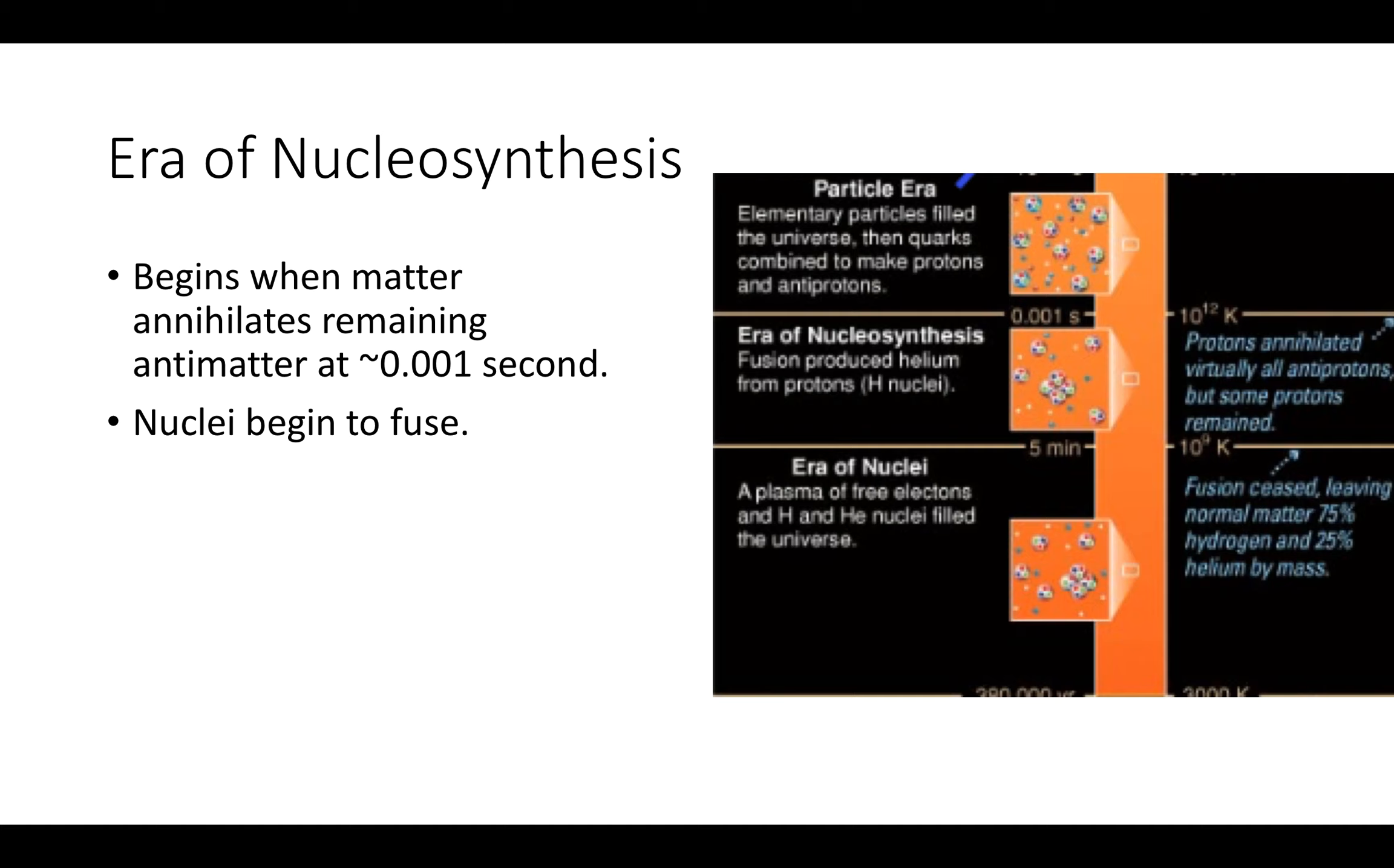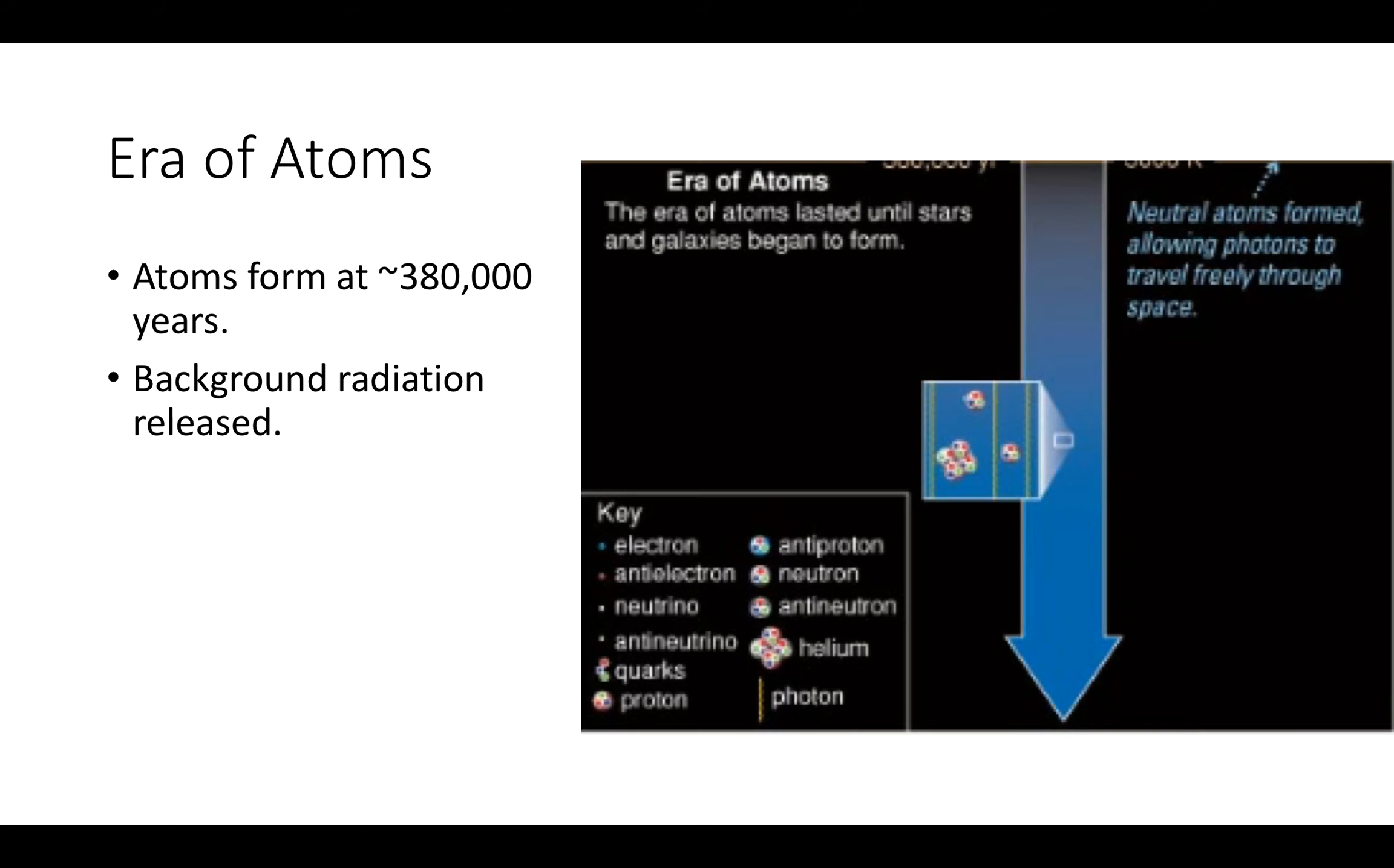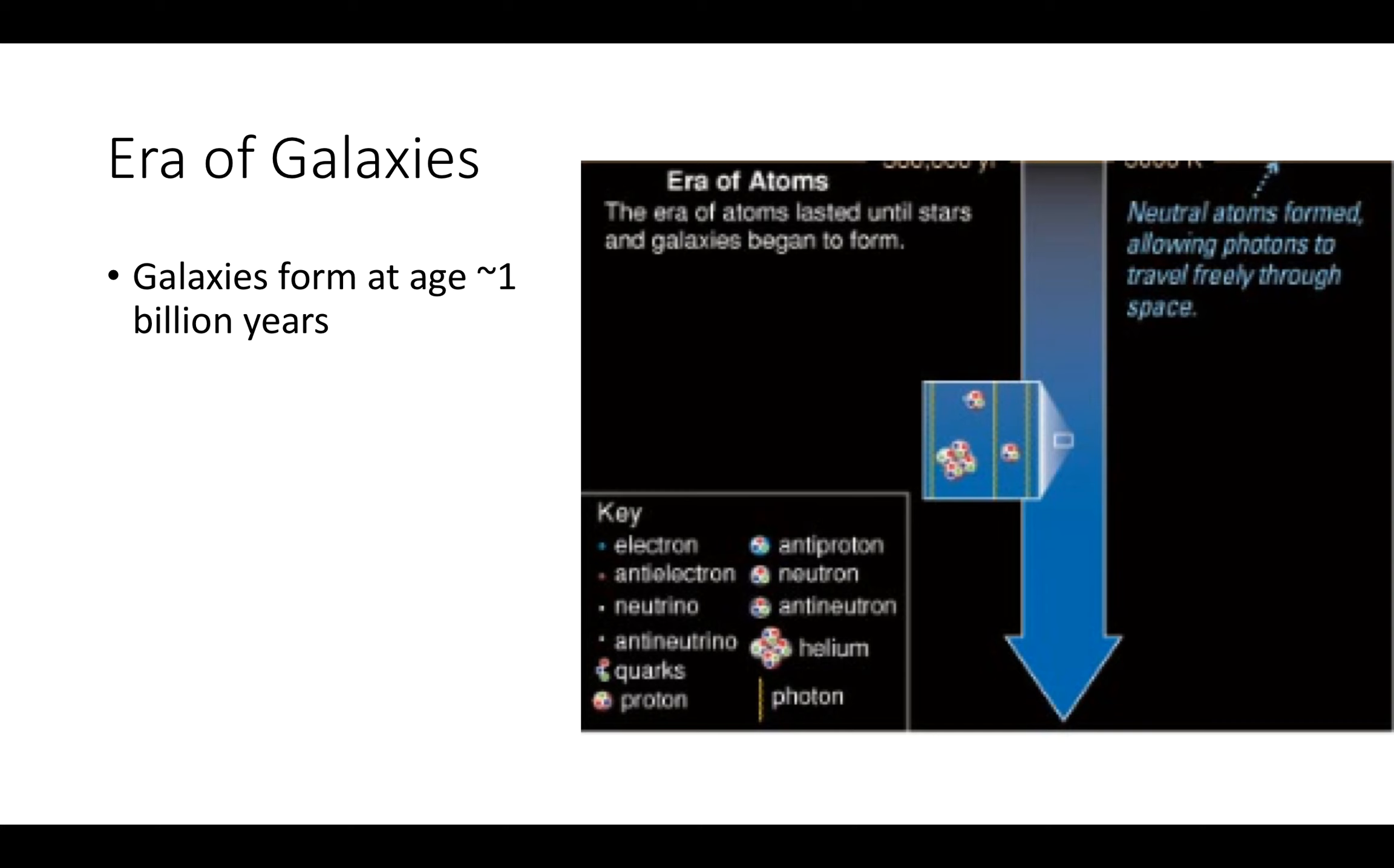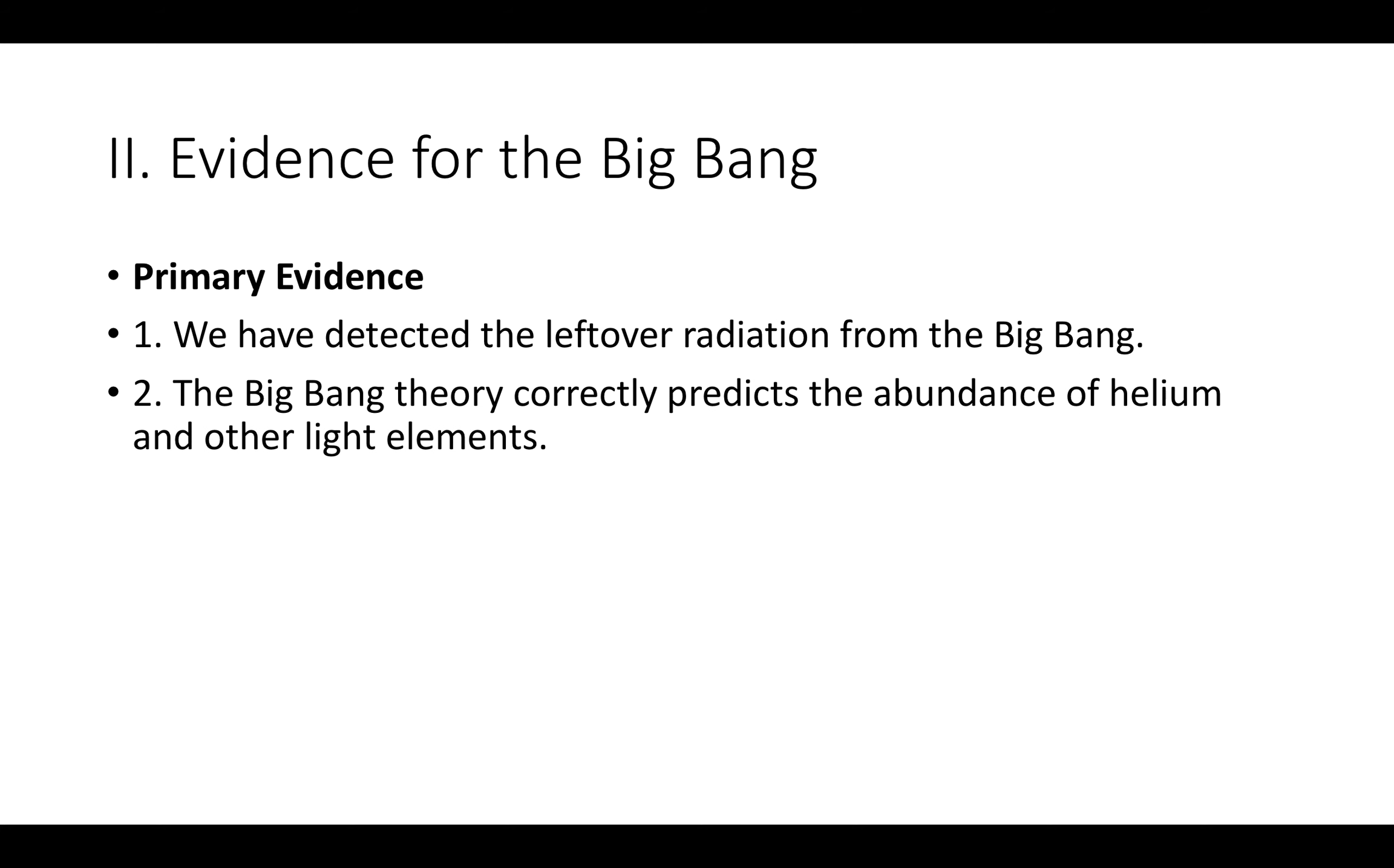We also get the area of nucleosynthesis. So fusion produced helium for protons from hydrogen nuclei, and the protons were annihilated virtually all antiprotons, but some protons remained. The era of the nuclei is the helium nuclei form at around three minutes after the birth of the universe. Era of atoms. So now we're starting to form atoms. Background radiation is released. This happened about 380,000 years into the birth of the universe. And then finally, our era of galaxies. Basically, early universe was hot and dense. As it cooled, we got particle production. Fusion turned remaining neutrons into helium. And then we have radiation that's traveling freely after the formation of these atoms.